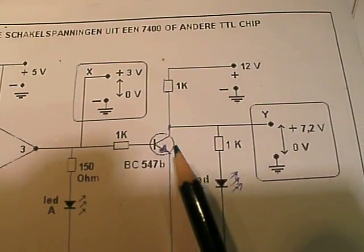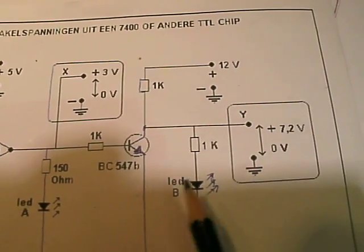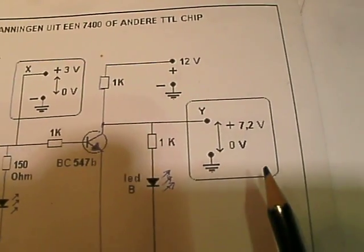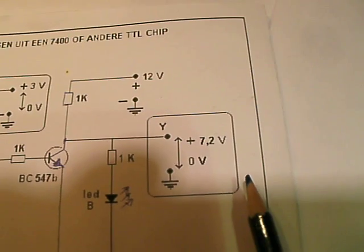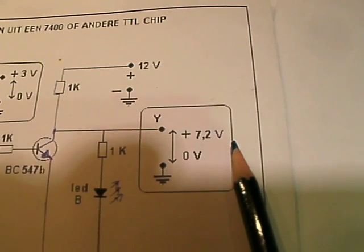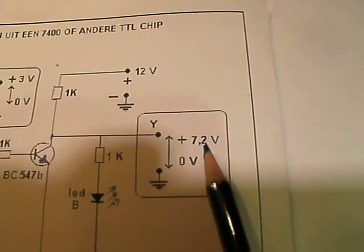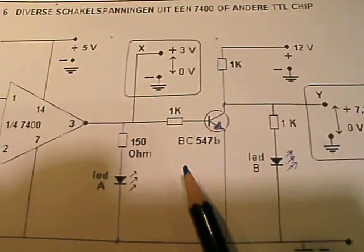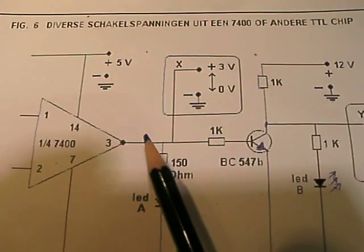And that means that this transistor switches and at the output we have here a switch voltage from approximately 7.2V compared to 0V when the chip is at logic 0.